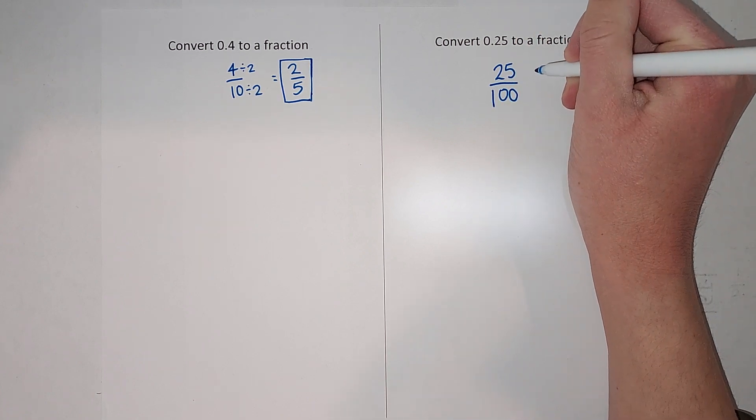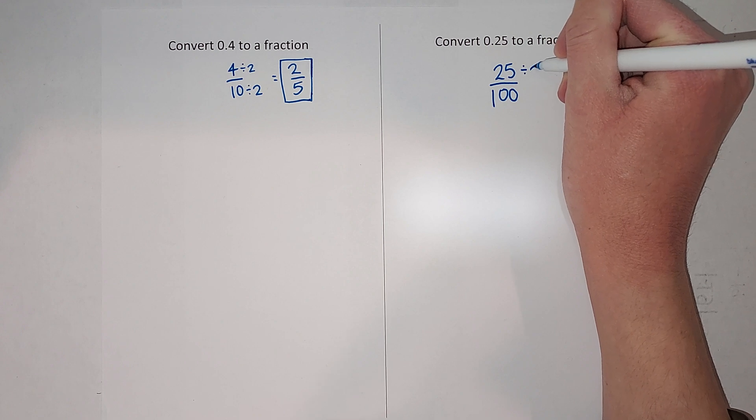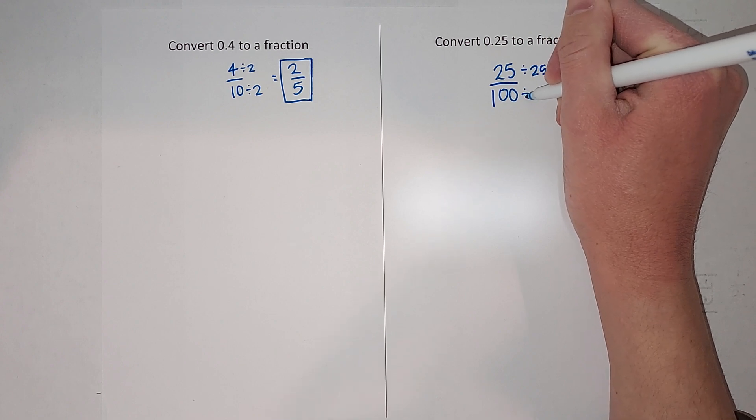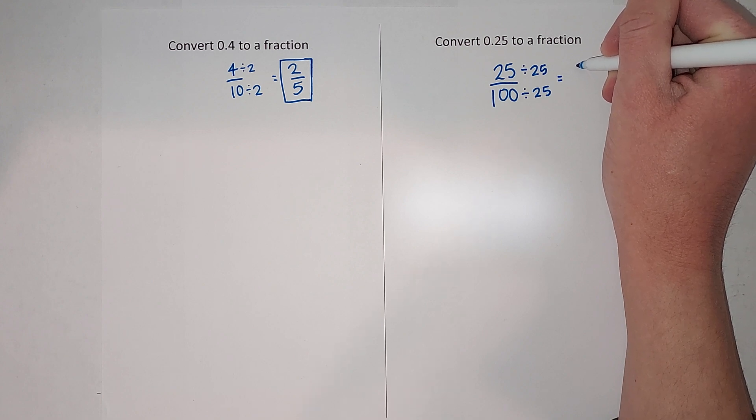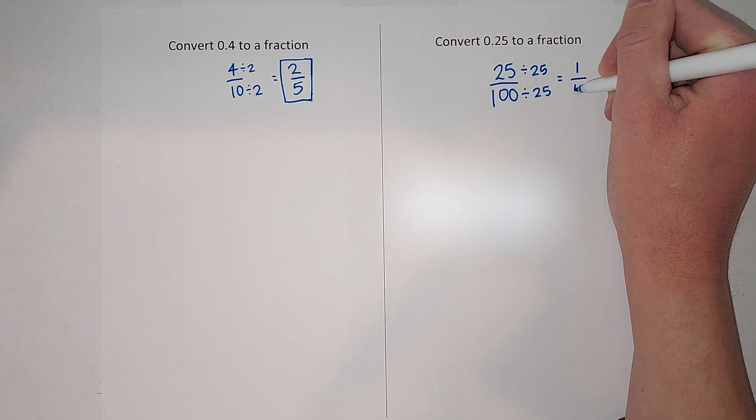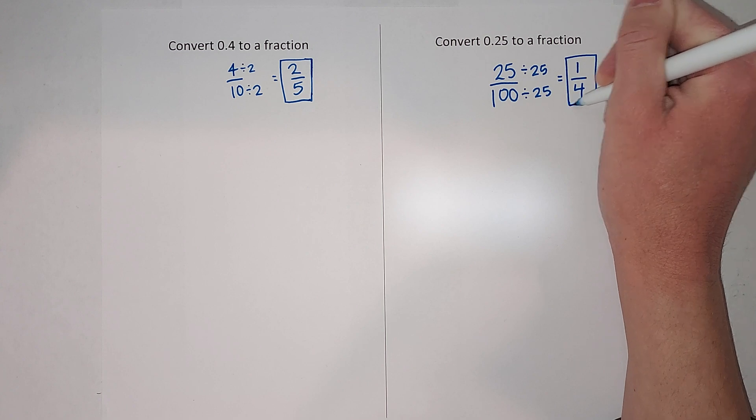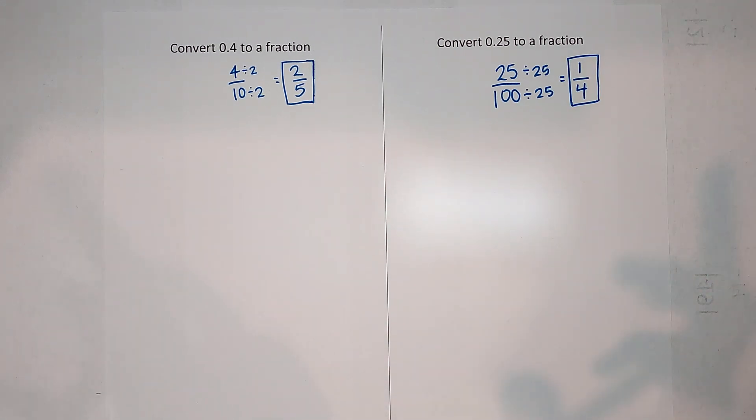And then this simplifies down. You might just know by looking at it, 25 goes into both of them, and that simplifies all the way down to one fourth. All right, not too bad, right? Hopefully you can get your homework done. Bye!